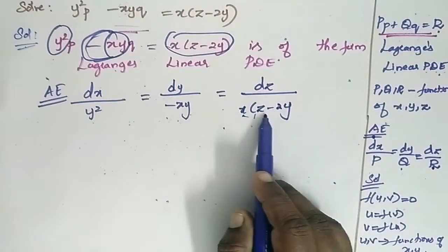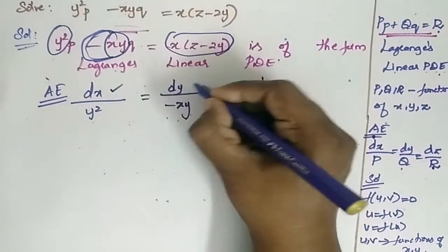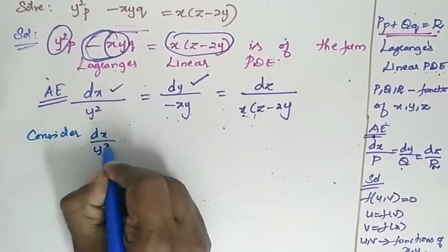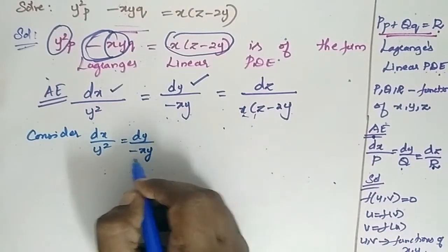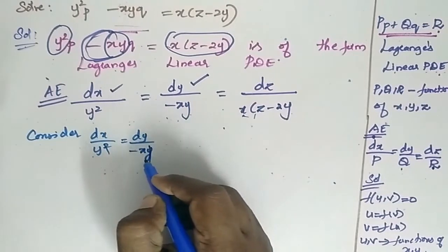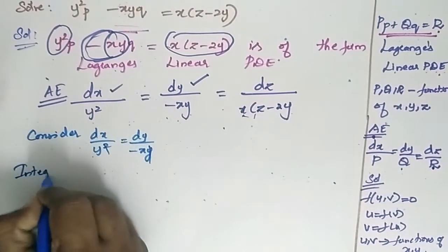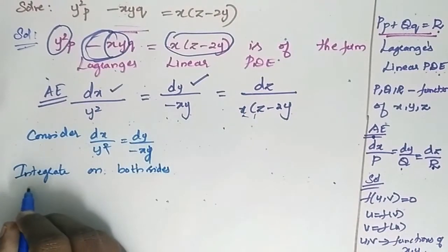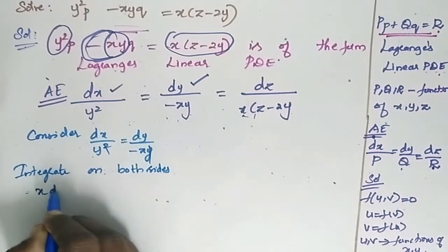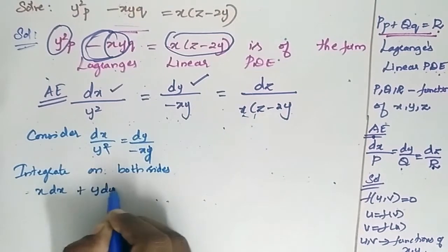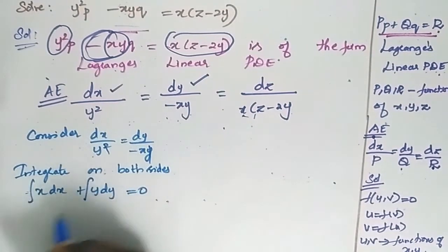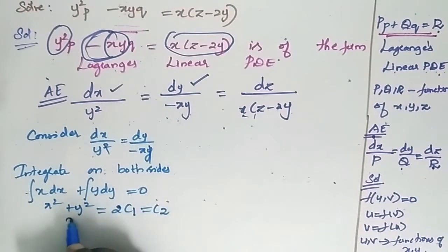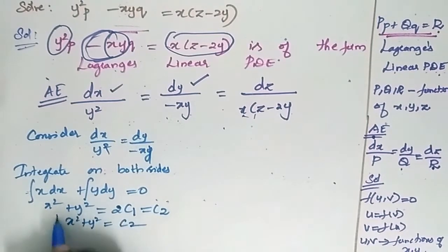Now consider dx/y² = dy/(-xy). I can cancel one y, so I will get x dx + y dy = 0. Integrating on both sides, I will have x² + y² = 2c₁, which gives x² + y² = c₂.